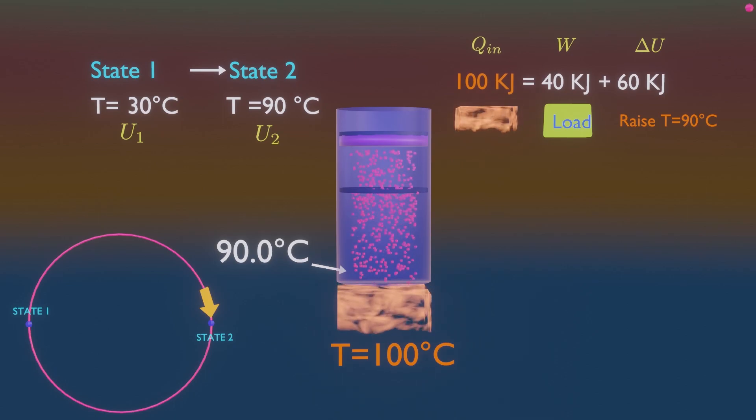So with 100 kilojoules of heat given, only 40 kilojoules is used to do work, and remaining 60 kilojoules of energy is used to increase the temperature of gas.